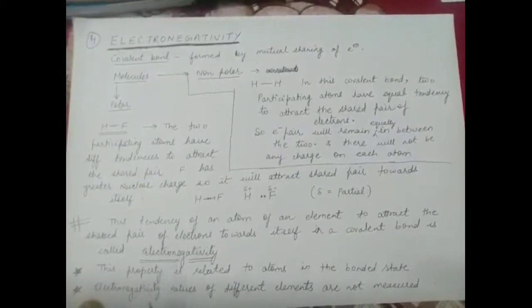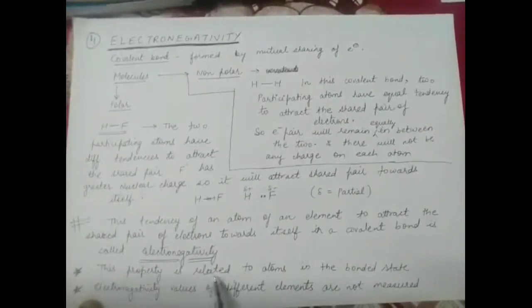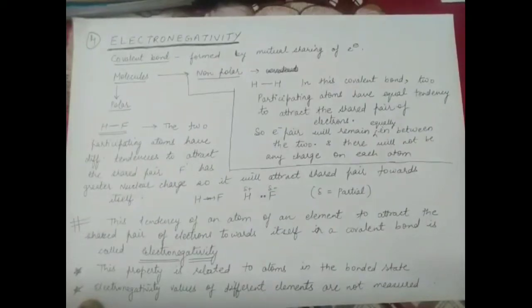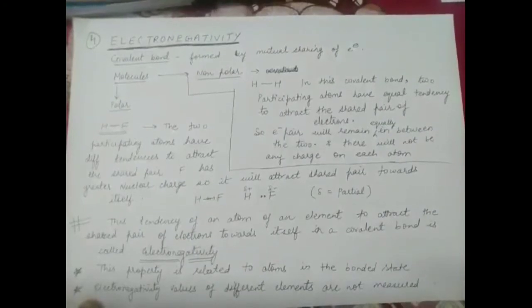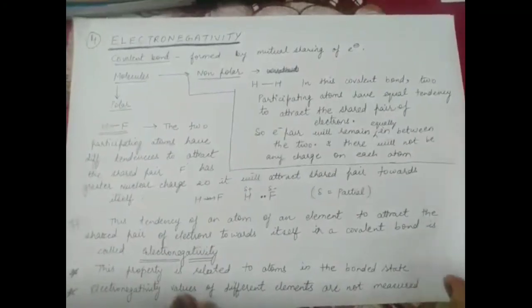Remember, electronegativity is entirely different from electron gain enthalpy. In electron gain enthalpy, an electron actually enters inside the atom — it is the energy released when an electron is added to an isolated atom. In electronegativity, the atom is only attracting the electron towards itself, and this property relates to atoms in the bonded state. Also, electronegativity values cannot be directly measured; we can only compare elements as more or less electronegative.